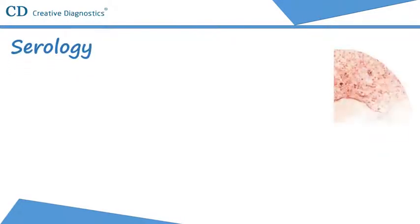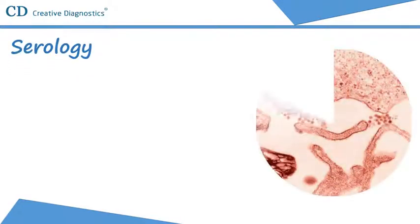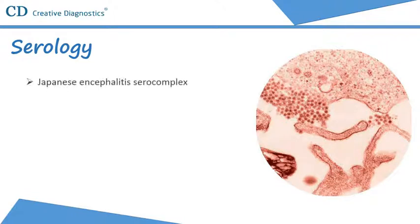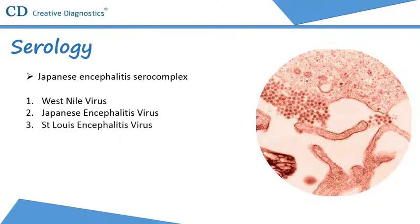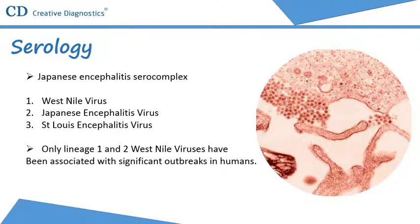Serologically, West Nile virus is a member of the Japanese encephalitis serocomplex, which includes Japanese encephalitis virus and an endemic North American Flavivirus, St. Louis encephalitis virus. West Nile viruses can be designated into at least five phylogenetic lineages, and only Lineage 1 and 2 have been associated with significant outbreaks in humans.